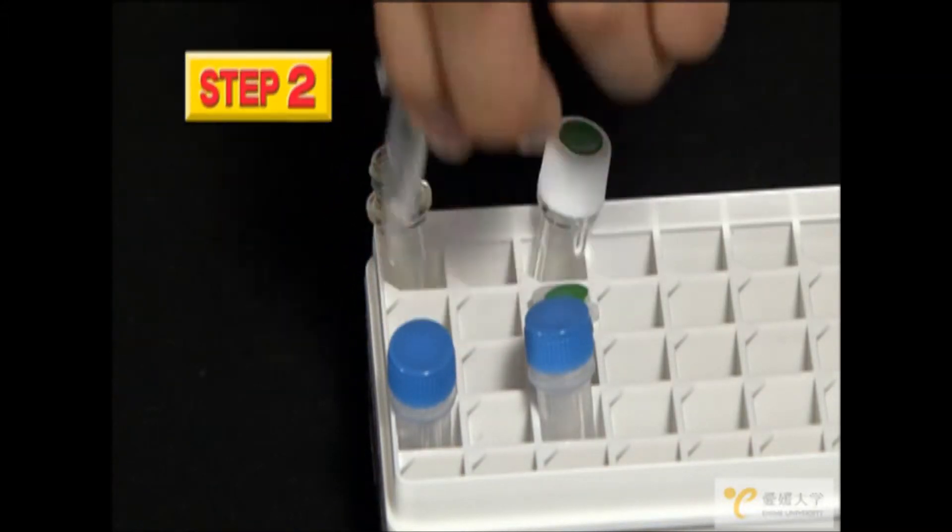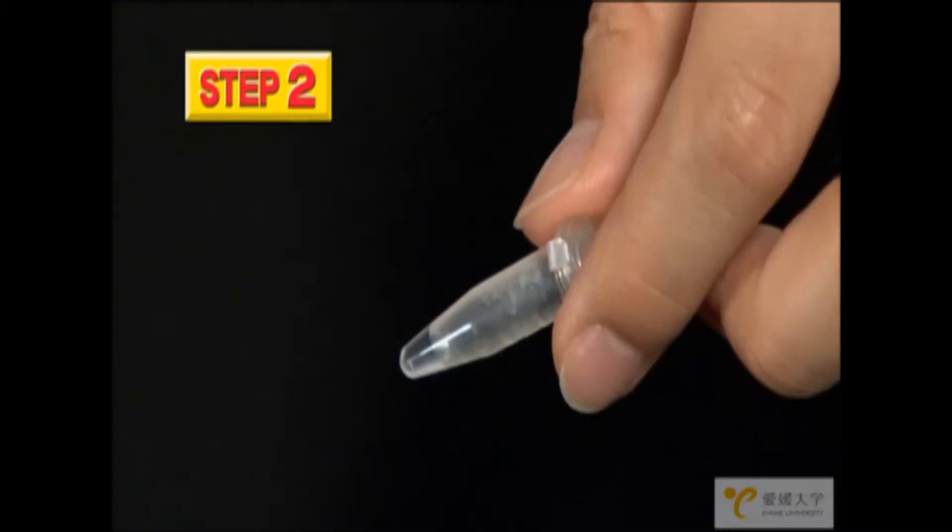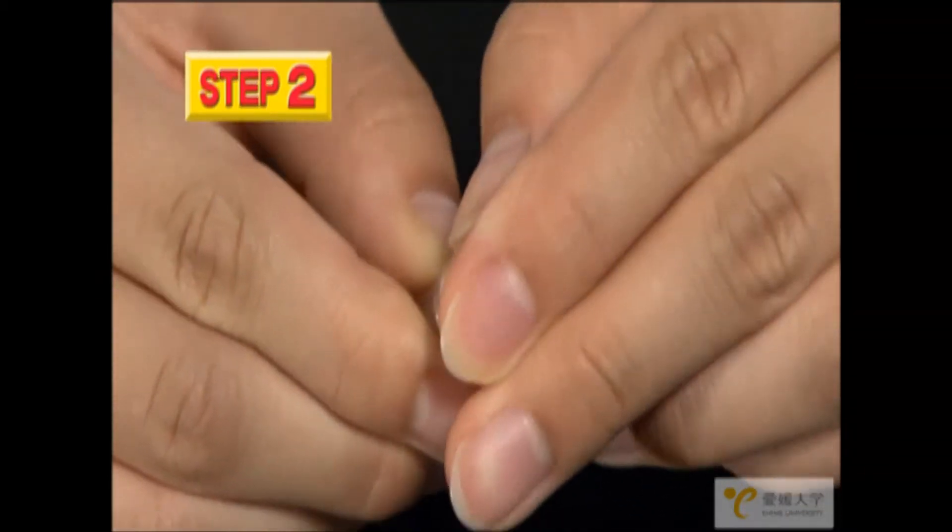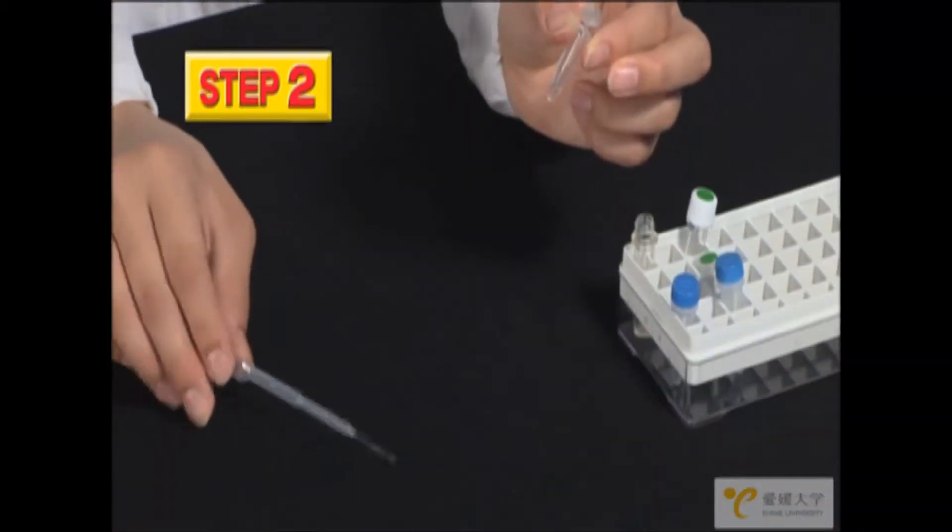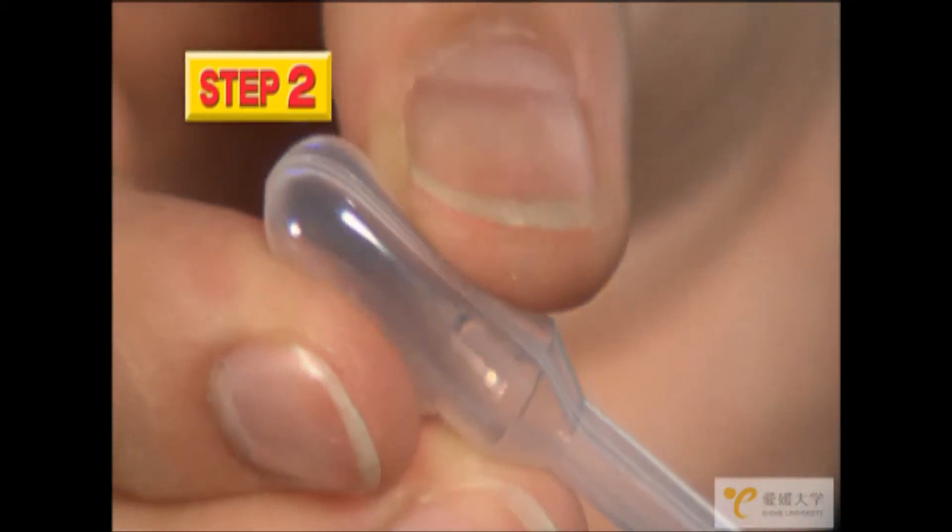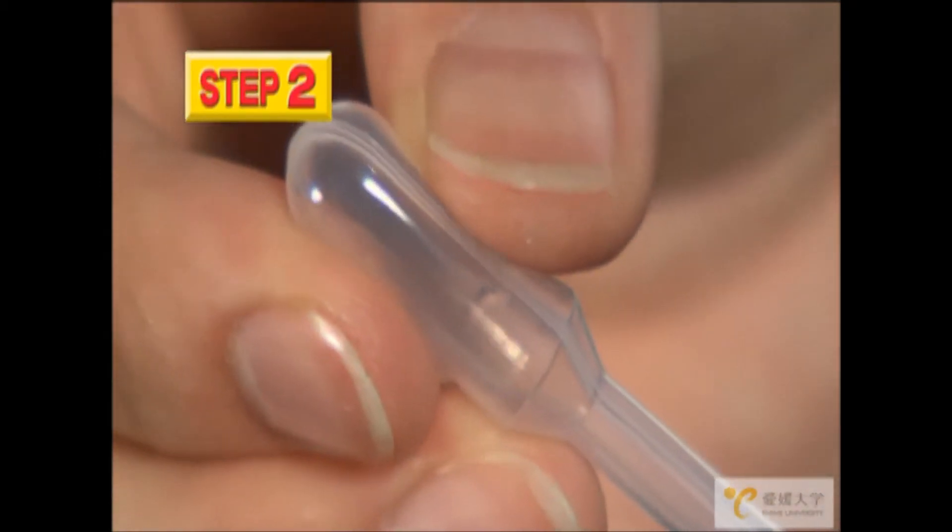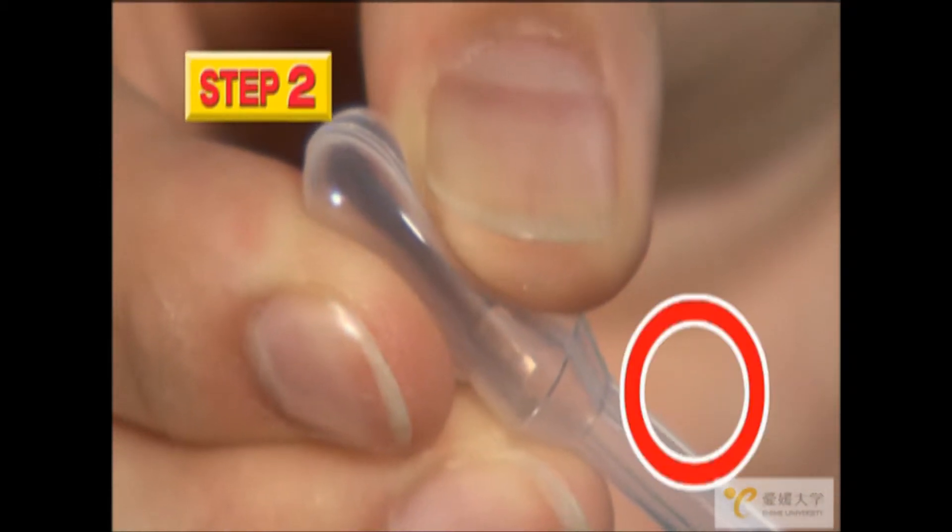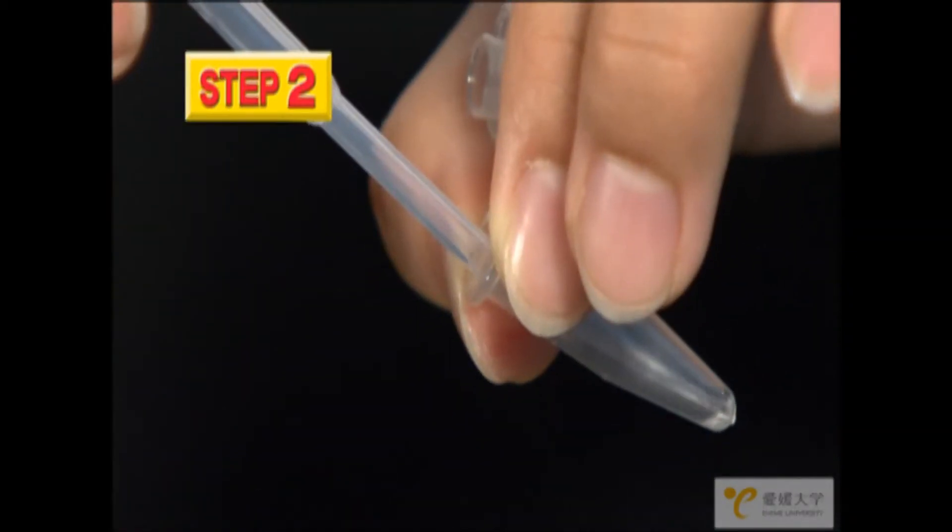Next, take the small tube without the green dot. Make sure the liquid is at the bottom and then take off the cap. Use the dropper to collect the liquid. Do not squeeze the dropper hard. Just gently squeeze it to obtain the liquid. And expel the liquid into the large tube.